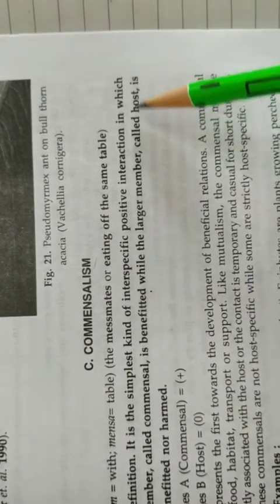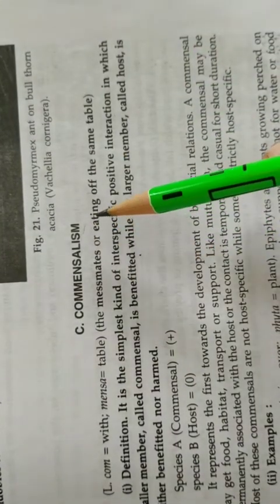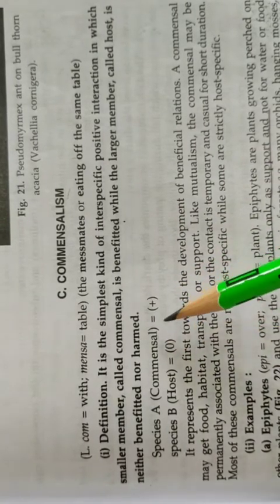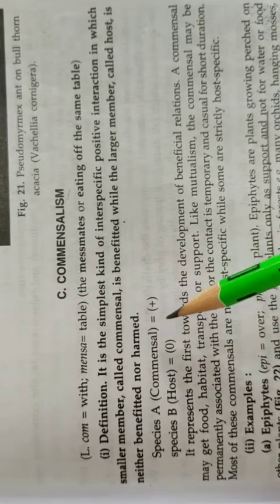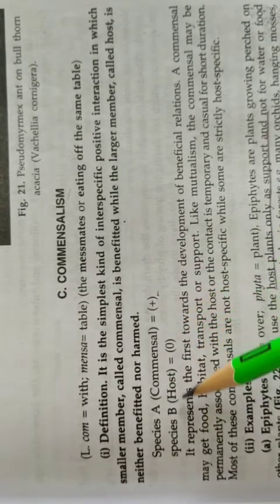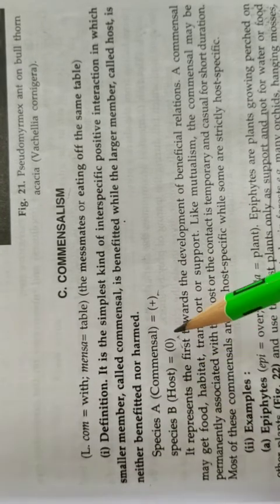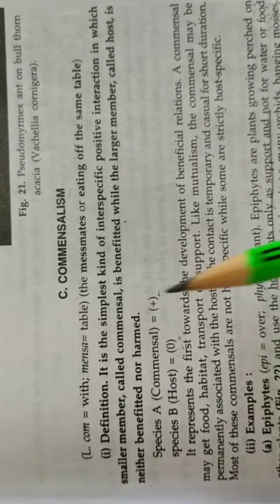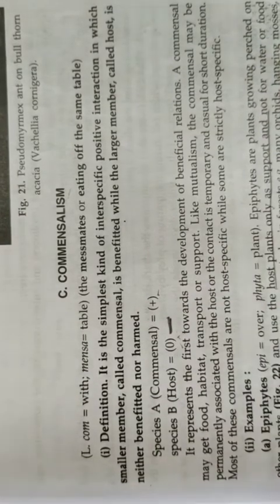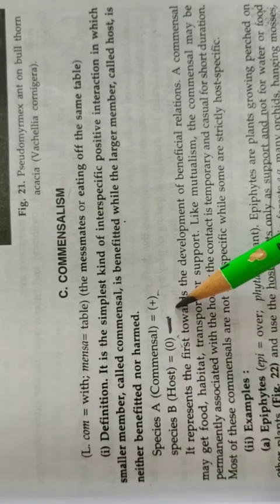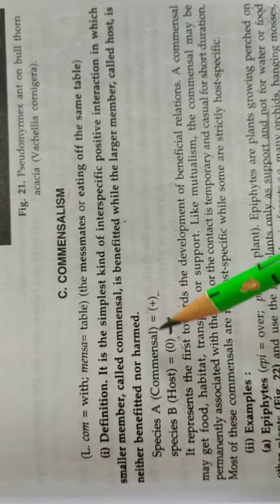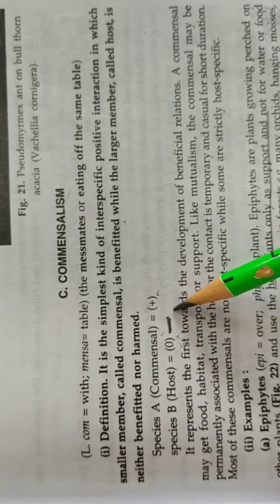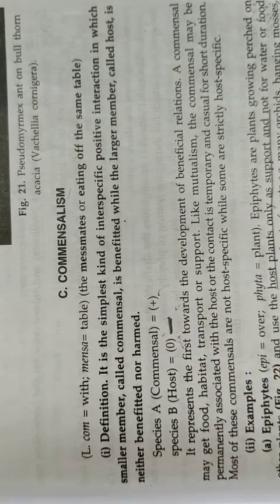Now the next association is commensalism. Commensalism is a positive interaction in which the smaller animal, called the commensal, is always benefited, while the larger animal — the host — is neither benefited nor harmed. This is different from parasitism, where the host had a negative effect. In commensalism, the commensal benefits and the host is unaffected. There are many examples.